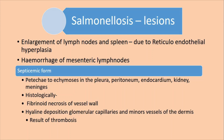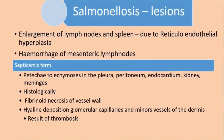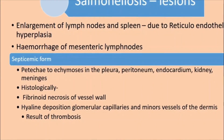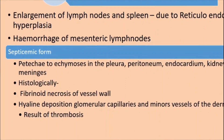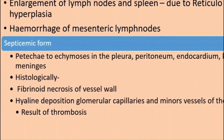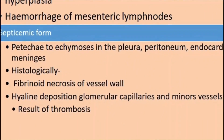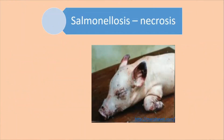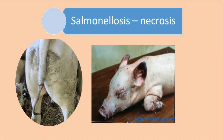In the septicemic form, you can see petechial ecchymosis in the pleura, peritoneum, endocardium, and kidney — that means hemorrhage all over the body. Histologically, there is fibrinoid necrosis of the cell wall and hyaline deposits of glomerular capillaries and minor vessels of the dermis. You may also find rashes because the capillaries of the dermis are affected. There will be thrombosis, leading to infarction. You can see the tip of the ear has become dark black because of necrosis. The tail is almost sloughed off. There are some other diseases which cause similar conditions, such as mycotoxins. Another lesion is prolonged ulcerative proctitis — inflammation of rectum and anus — sometimes with thickening and stricture of the anus causing obstruction and distension of the rectum.